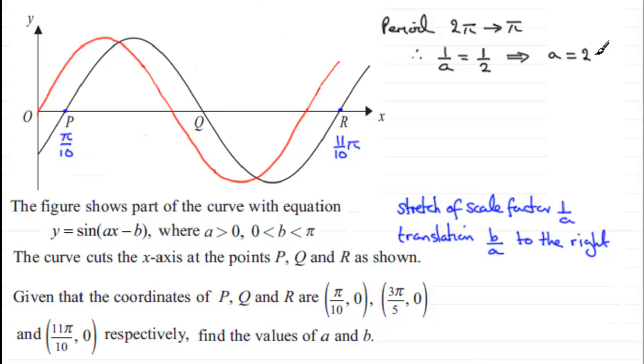Now we're going to translate this graph, the red graph, to the right by π over 10 units. And so that means that our translation factor, b over a, must represent π over 10 units. So what we've got here then is that therefore b over a must equal π over 10 units. Going from 0 to π over 10.